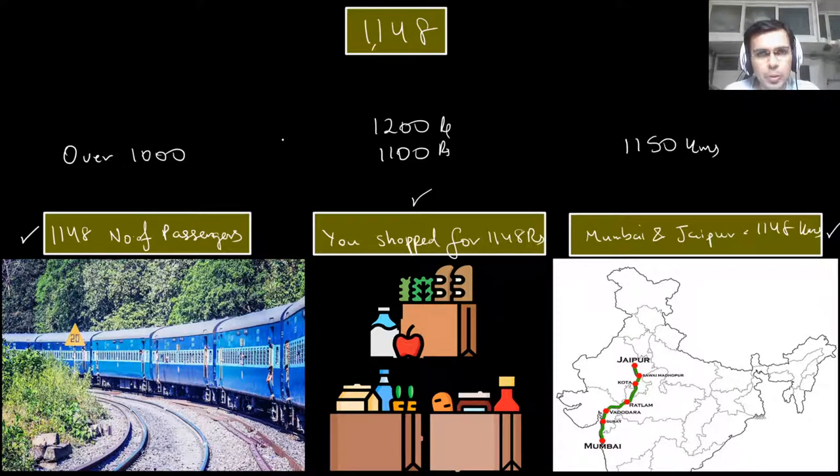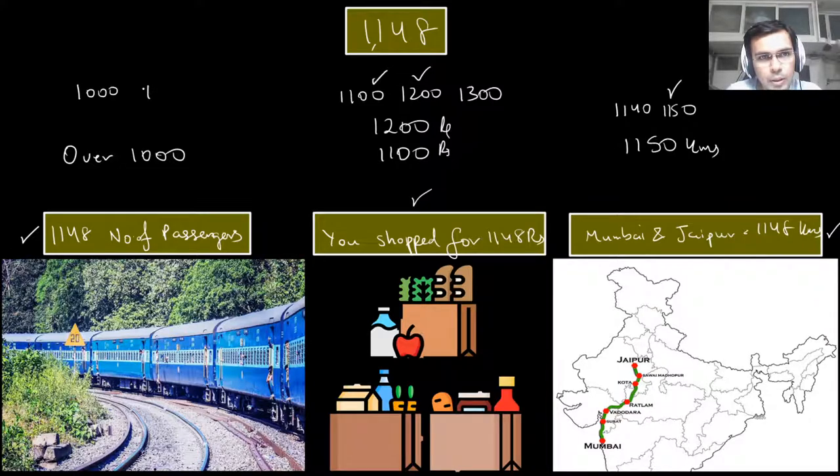Now, you see in three different situations, the 1148 was estimated to be different. Here, if you look closely, this was the multiples of 10. If we look closely, if it's 1140, 1150, we selected 1150. Here, if it's 1100 or 1200 or 1300, if we are jumping by the multiples of 100, we selected either this or this. And here, if we were jumping by multiples of 1000s, then this would be 2000 and we selected 1000.